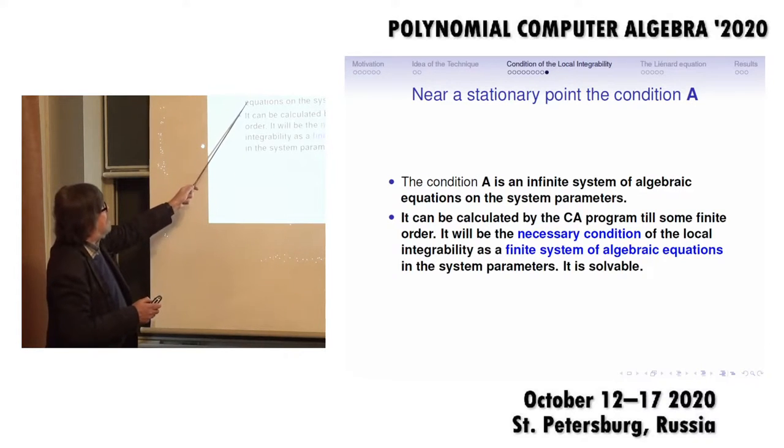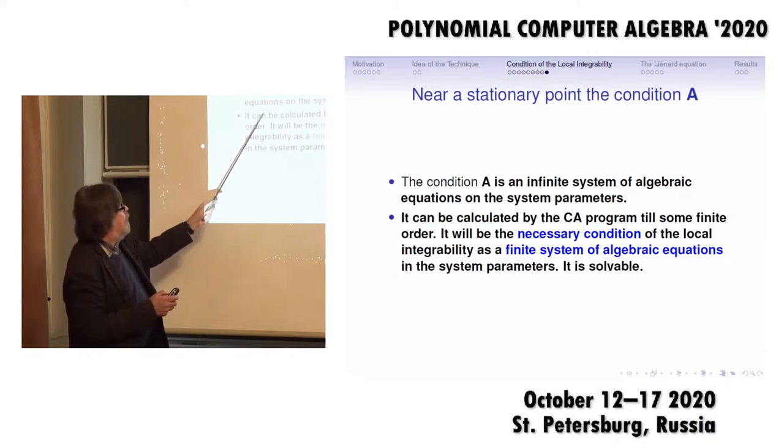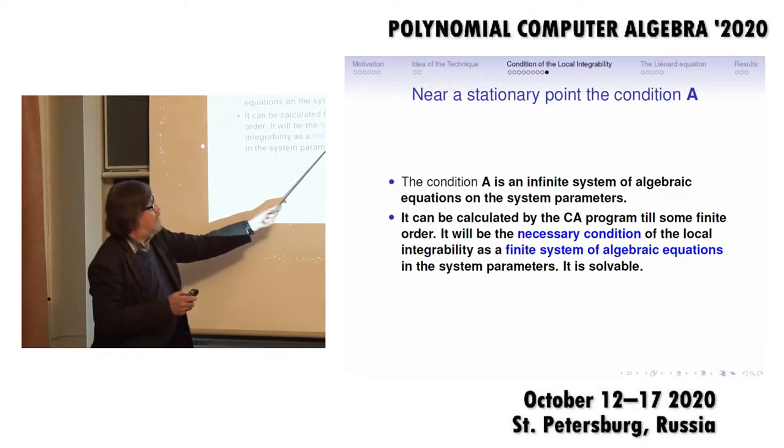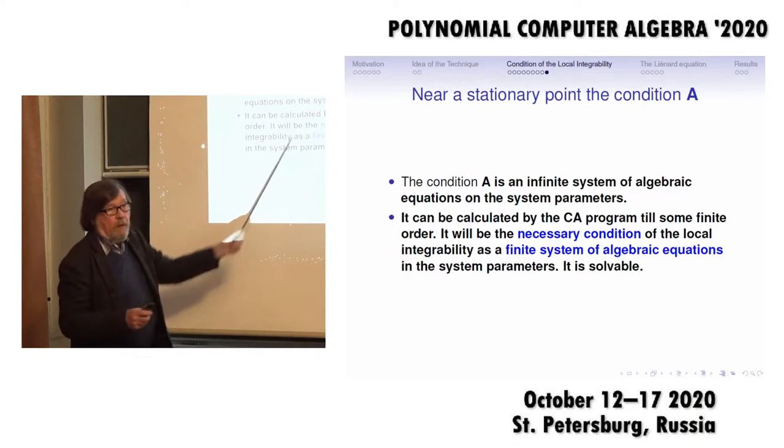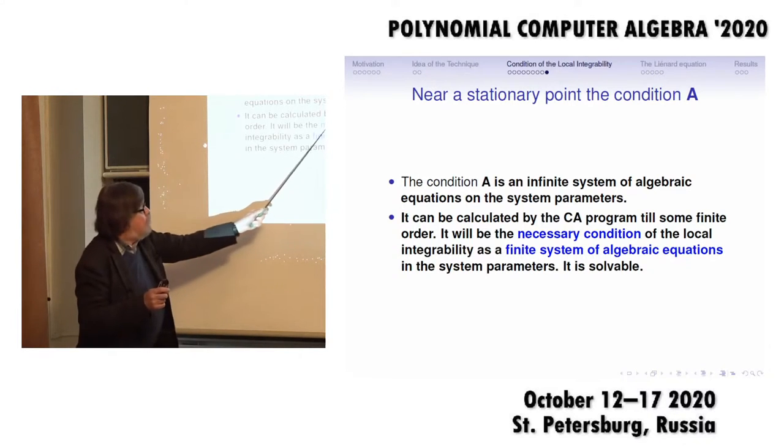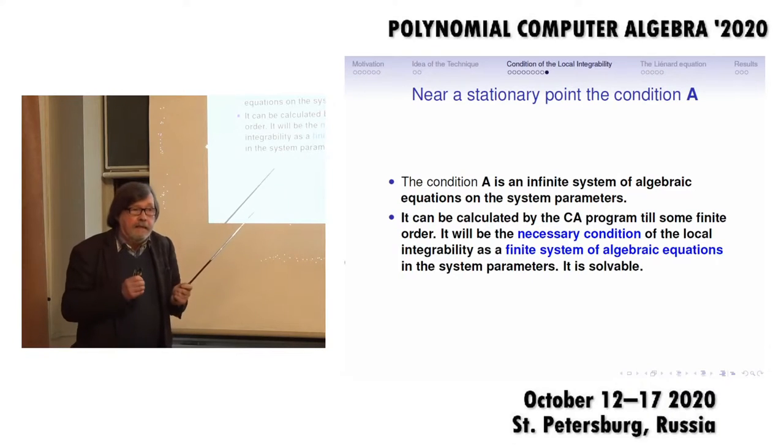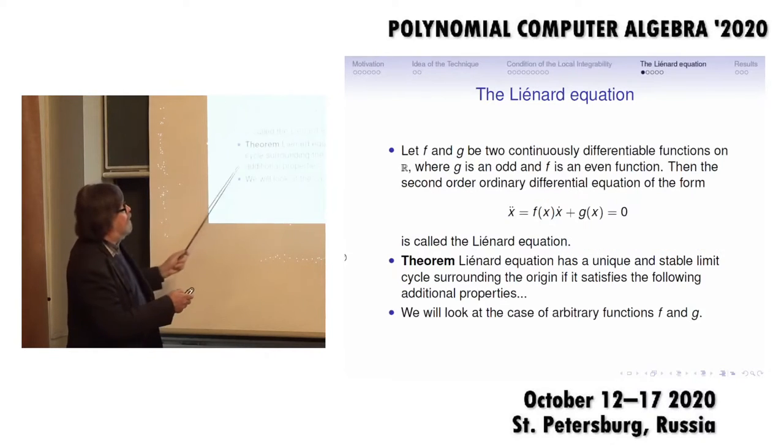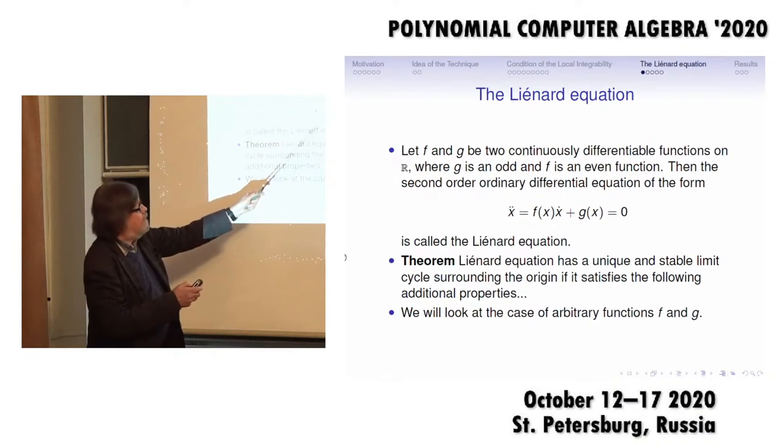So condition A is an infinite system of algebraic equations. We can calculate some first-order terms in this condition, but if this condition is necessary, each part of this infinite series of systems is a necessary condition. So we can calculate necessary conditions. We do it and demonstrate it on the Liénard equation.